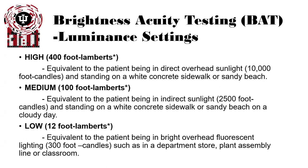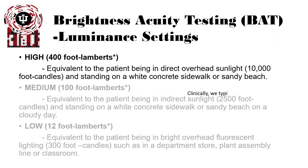BAT testing has three different luminance settings. High luminance is equivalent to the patient being in direct overhead sunlight standing on a white concrete sidewalk or sandy beach. Medium setting is more equivalent to that same situation on a cloudy day. The low setting is more like being in a fluorescent indoor environment, such as a department store, plant assembly, or a classroom. In most cases, because we're dealing with cataract patients, we leave it at high settings. The lower settings can be used if patients have complaints of glare in more indoor environments.